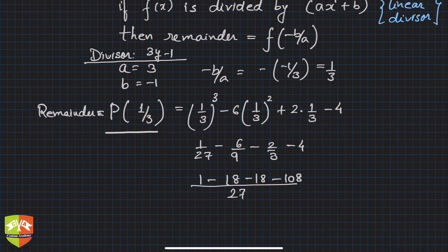Let me correct: 1/27 - 6/9 + 2/3 - 4. The -18 and +18 cancel out, giving us -107/27.